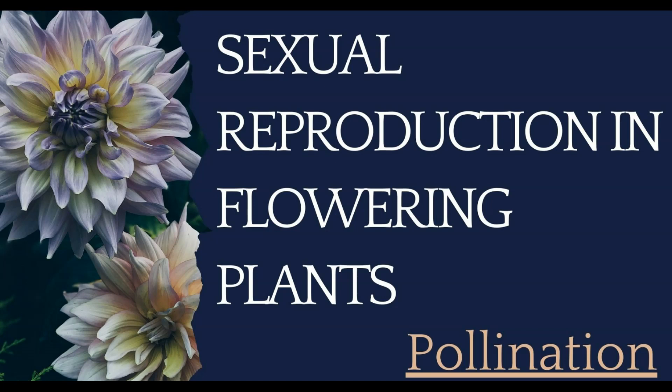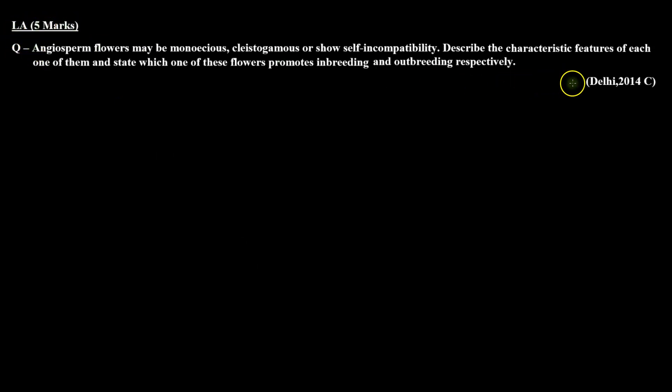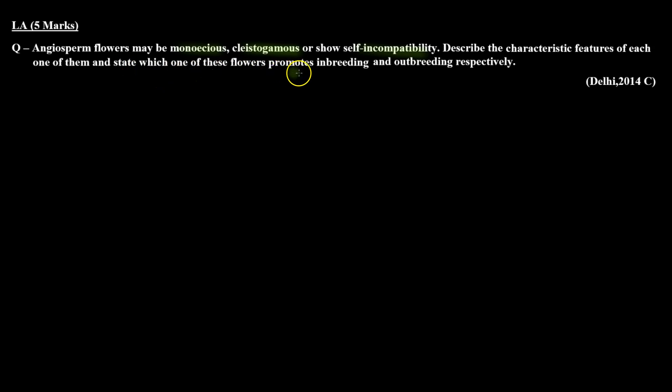Hello everyone. We are solving previous year questions of the chapter 'Sexual Reproduction in Flowering Plants' on the topic of pollination. In today's session, we are going to solve a long answer type question of 5 marks which was asked in a daily examination in 2014. The question is: angiosperm flowers may be monoecious, cleistogamous, or show self-incompatibility. Describe the characteristic features of each one of them and state which one promotes in-breeding and out-breeding respectively.